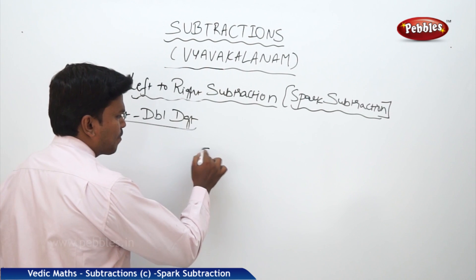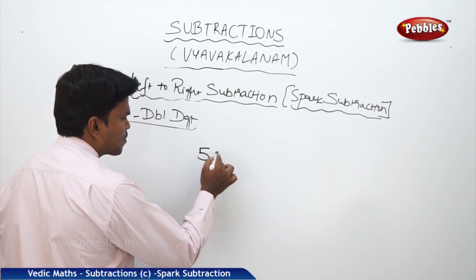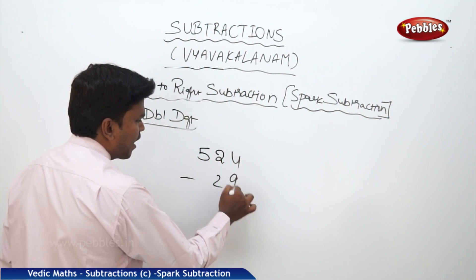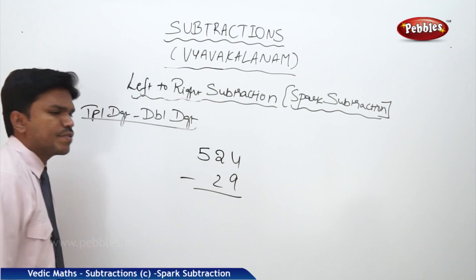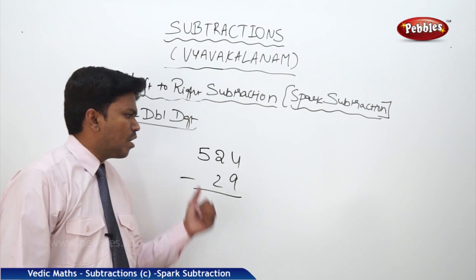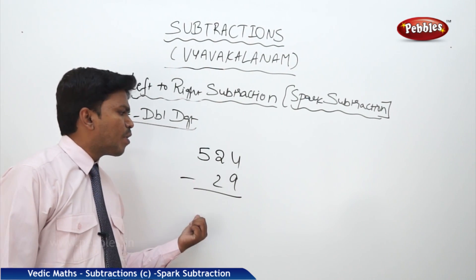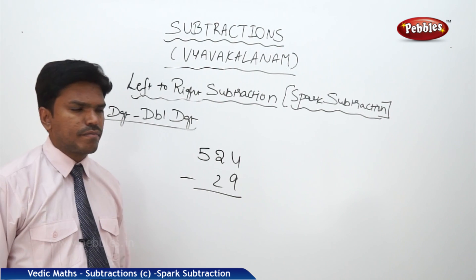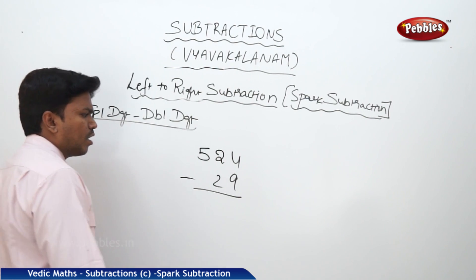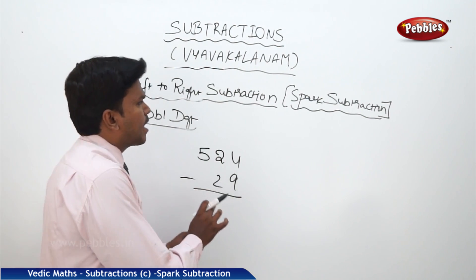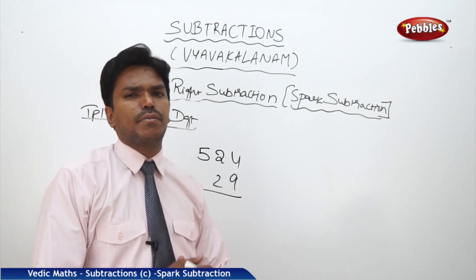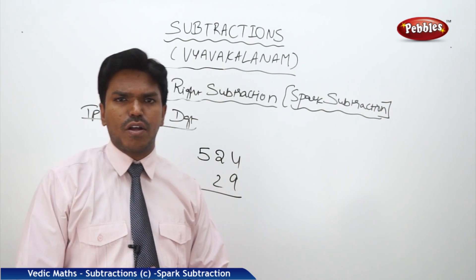Let us take one more example. Suppose 524 minus 29. I want to do this one. First, I will drop 5 as it is. But before dropping 5, see — in this case, you will get one exception. What is that exception? We will discuss now.